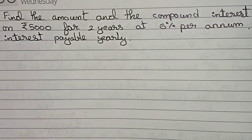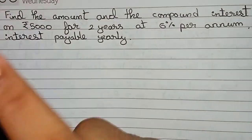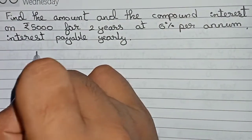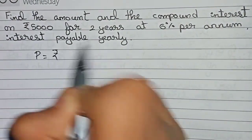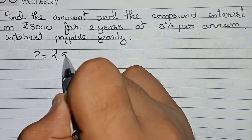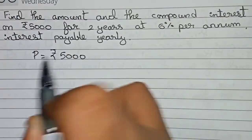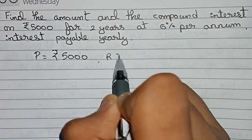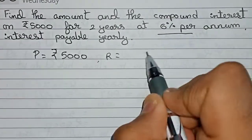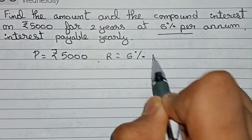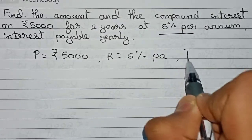This question will be solved with the compound interest formula. First we write what is given in the question. The principal is equal to rupees 5000. The rate of interest is also given, it is 6 percent per annum, so R equals 6% per annum.